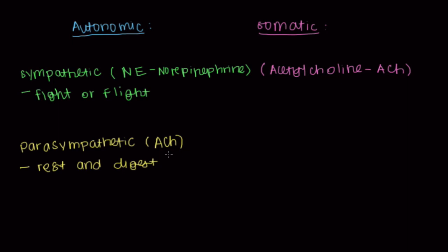So that's the two major divisions of the central nervous system: autonomic and somatic.